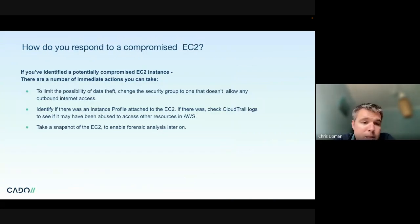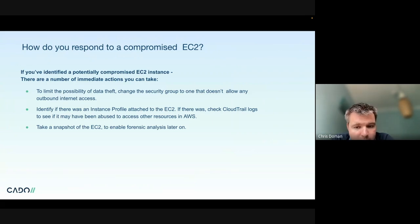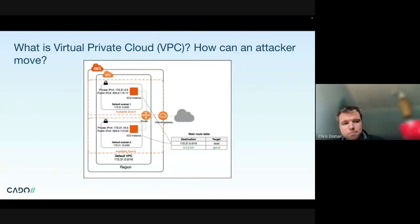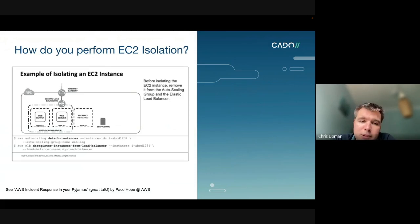When responding to a compromised EC2, you have a few options. You can turn it off, but be aware of the potential impact. Isolating it is often better — you can isolate at the network level by disconnecting from the VPC using security groups to block all internet access. Apply a new security group rather than modifying the old one, since you want to preserve it for analysis. Also check and lock down the IAM instance profile attached to the EC2, since a compromised instance with S3 access could mean additional data loss. Finally, take a snapshot of the EC2 for later analysis. You can also isolate security groups and the load balancer using CLI commands — there's a great talk, AWS IR in Your Pajamas, with examples of this.